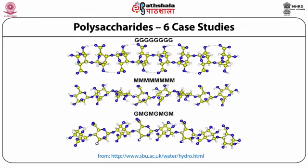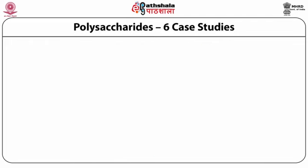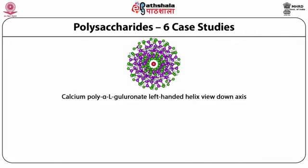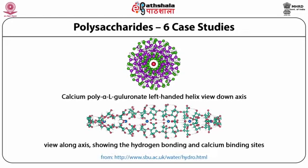Poly-L-glucuronate forms hydrogen bonds between units, making it conformationally more stable and flexible. Poly-mannuronate does not form this kind of hydrogen bond. In mixed sequences of glucuronate and mannuronate, some units have hydrogen bonds and some do not, giving a totally different orientation. Calcium poly-α-L-glucuronate forms a left-handed helix; viewing down the axis versus along the axis reveals hydrogen bonding and calcium-binding sites.